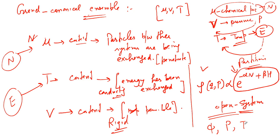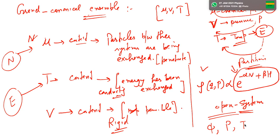This is the brief clear picture of the three types of ensembles: micro canonical ensemble, canonical ensemble, and grand canonical ensemble. In the next lecture we will start from the micro canonical ensemble, derive the density of states, and do one or two applications. Goodbye students, see you in the next lecture.